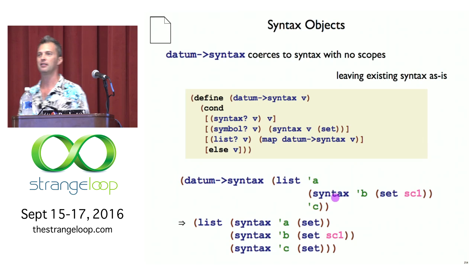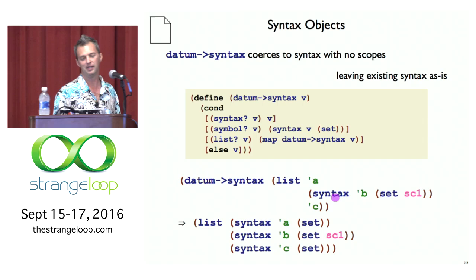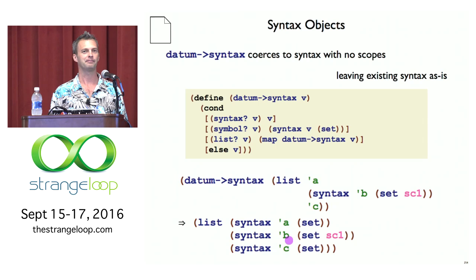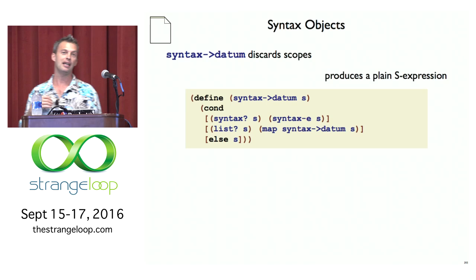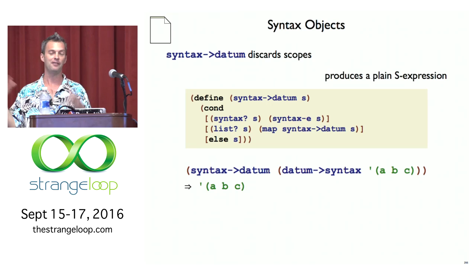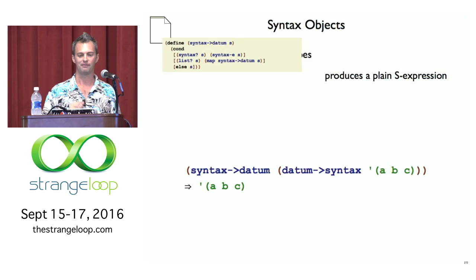If the input already has syntax objects — when a macro is manipulating pieces and putting them back together — datum-to-syntax leaves those alone. So symbols A and C get empty sets, but B gets left alone and preserves its set of scopes. The opposite operation, syntax->datum, takes a syntax object and throws away all the scopes. If you convert ABC to a syntax object then convert it back, you get the same thing.